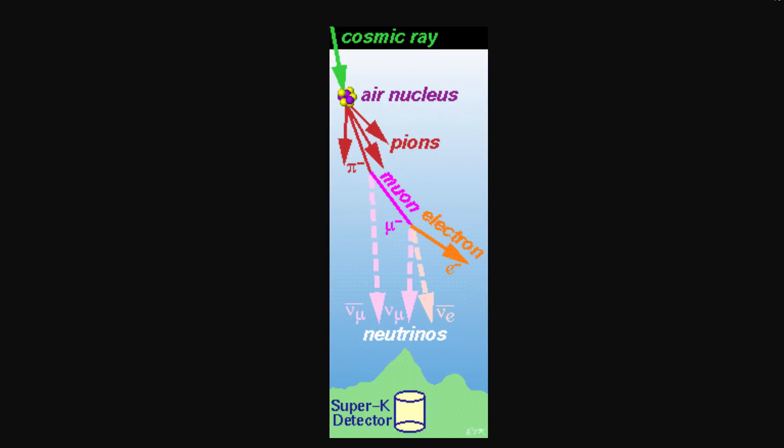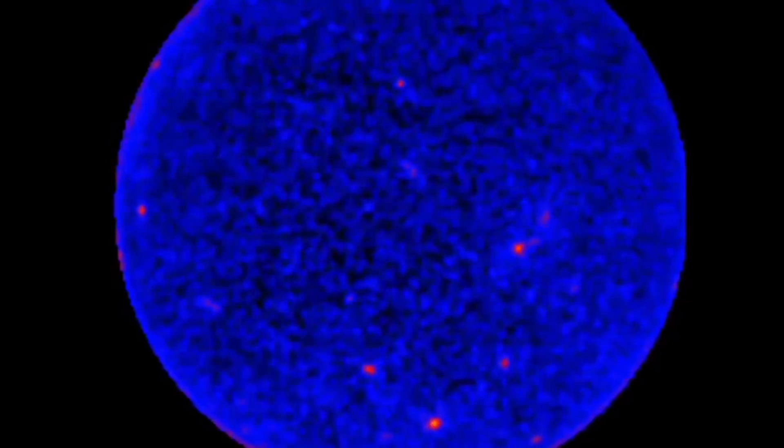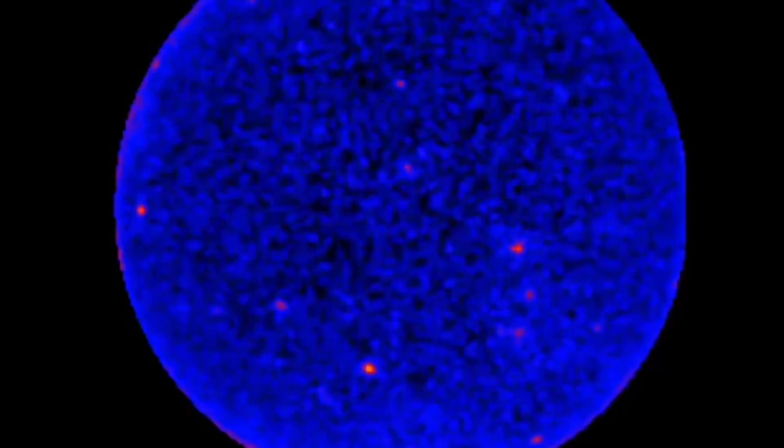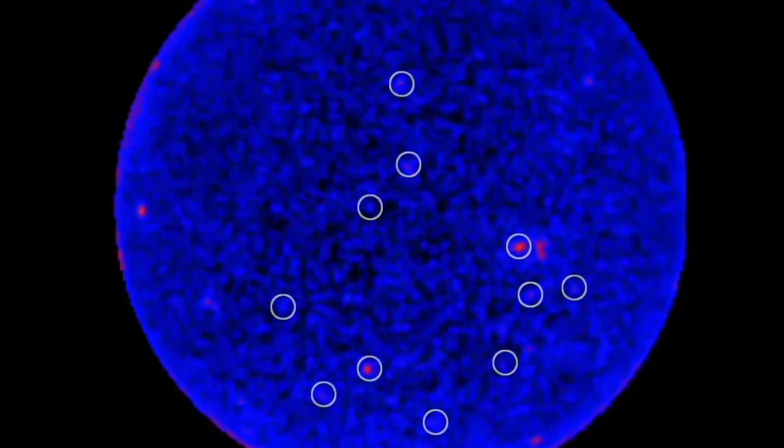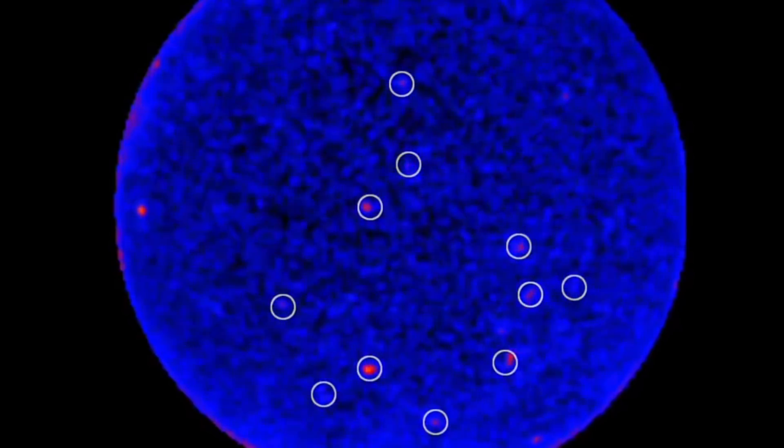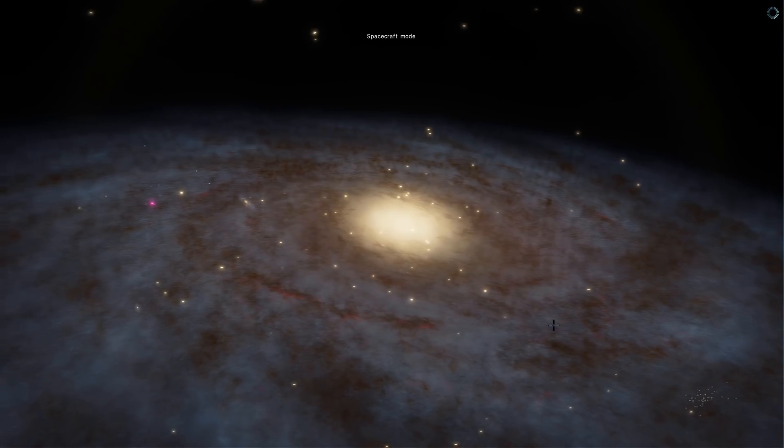But the neutrino we detected that made a huge splash in 2018 was actually from a supermassive black hole in the middle of a very active galaxy. And this galaxy is known as a blazar. To briefly explain what a blazar is,